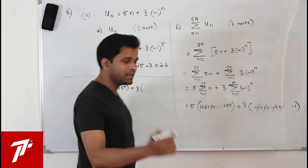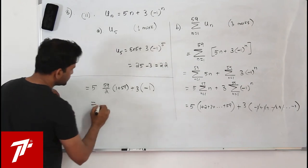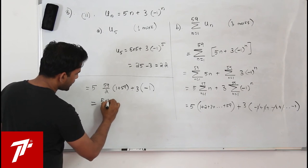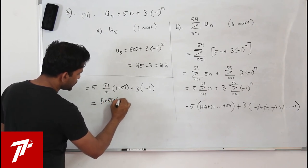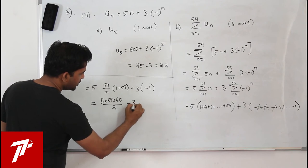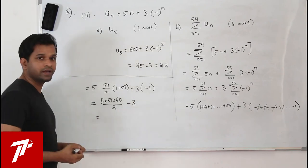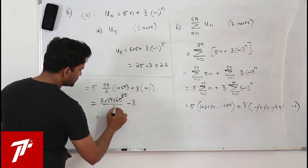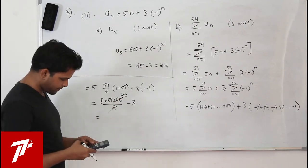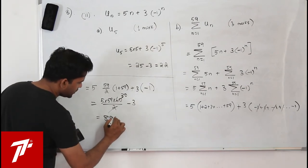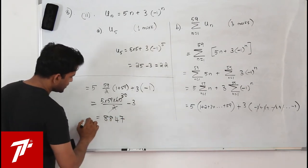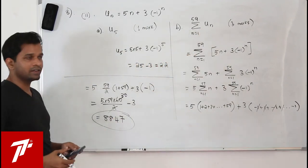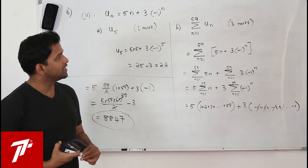So the total sum is 5×(59×30) + 3×(minus1) = 5×1770 minus 3 = 8850 minus 3 = 8847. Use your calculator to verify. This question has three marks.